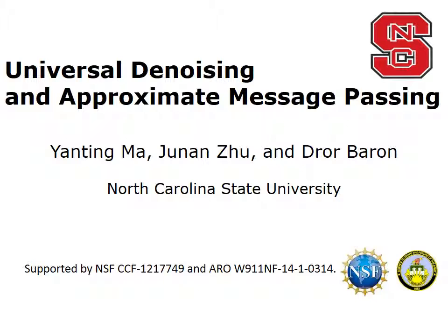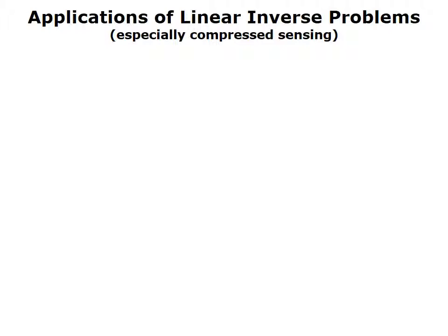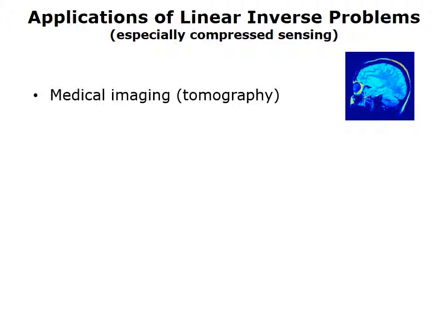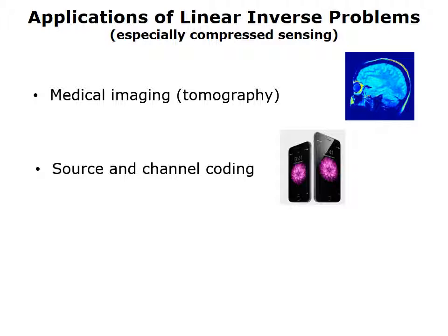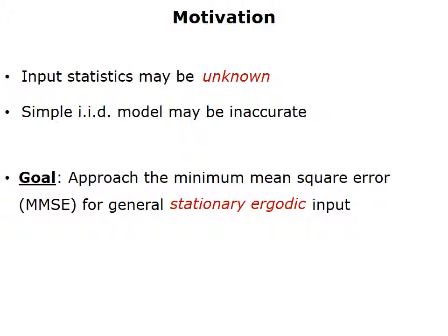Welcome to our tutorial video on universal denoising and approximate message passing. This is joint work with Yan Ting Ma and Junan Zhu. There are plenty of applications of linear inverse problems. Compressed sensing has shown that we can solve these problems even from a reduced number of measurements, and this is useful in medical imaging where we want to radiate the patient as little as possible. It's also useful in source and channel coding, and in the oil industry they have seismic imaging problems.